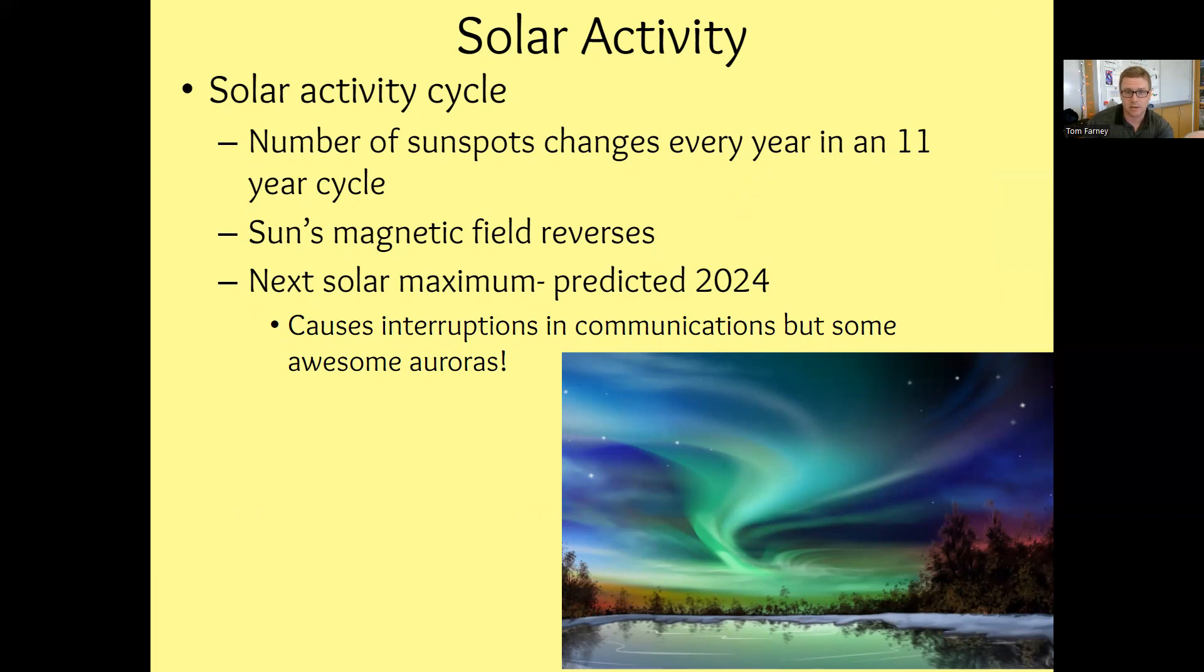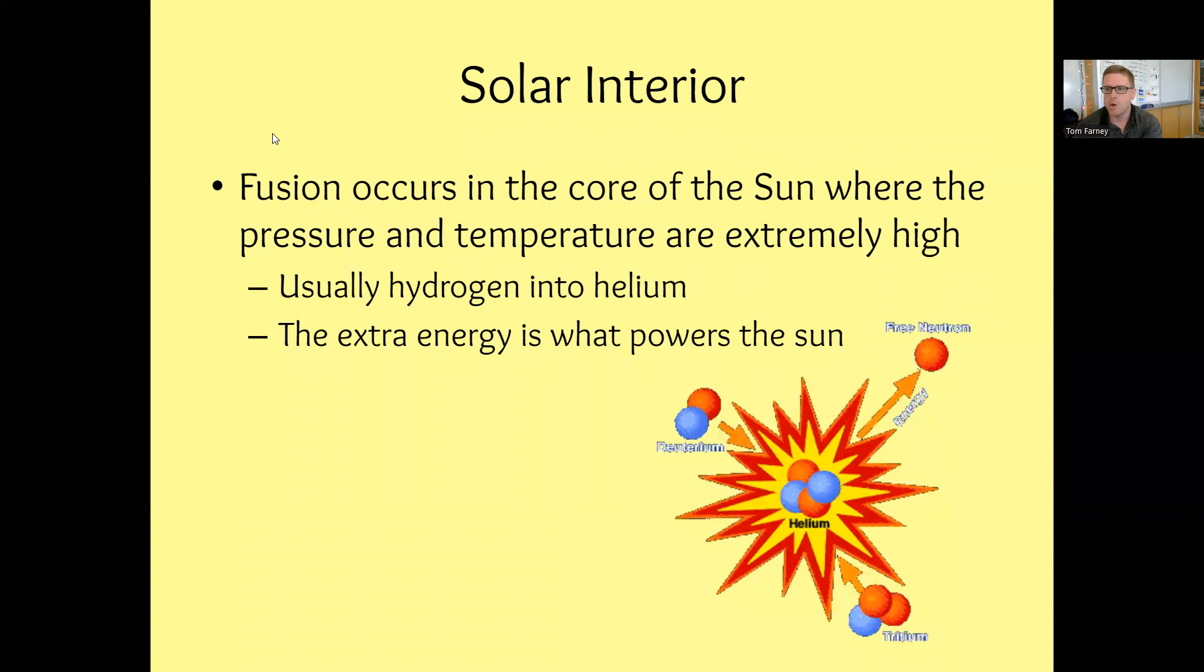There are sunspot cycles, so the number of sunspots changes every year within this like 11-year cycle when the sun's magnetic field reverses. There's like a flare up in solar radiation. The next maximum that is predicted is about, you know, it's in 2024. So we'll get some really strong auroras when we have that solar flare flare-up. And sometimes it can mess up with communications and GPS devices because those satellites are in space. But I think our technology's done a lot better at handling solar flare flare-ups.